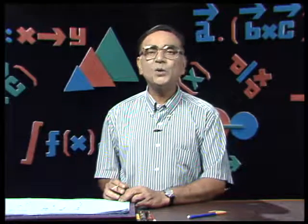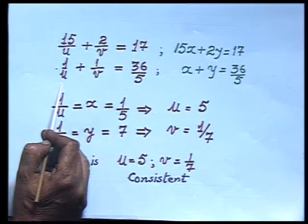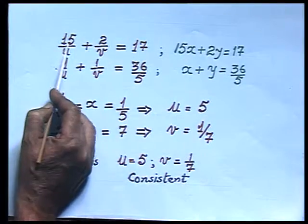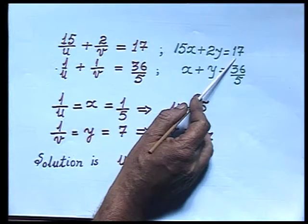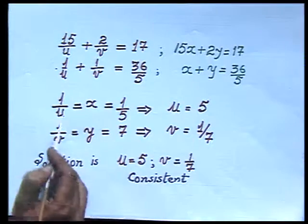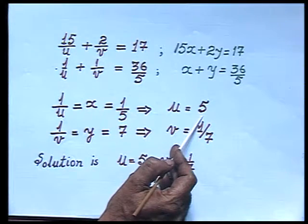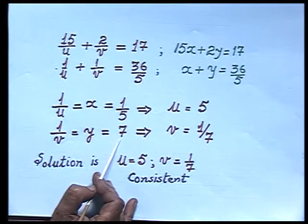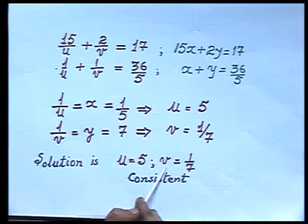But recall: the original equation was 15/u plus 2/v equals 17 and 1/u plus 1/v equals 36/5. This was changed into a linear equation by substituting 1/u as x and 1/v as y. Since 1/u equals x equals 1/5, we get u equals 5. And since 1/v equals y equals 7, we get v equals 1/7. So the solution is u equals 5 and v equals 1/7.